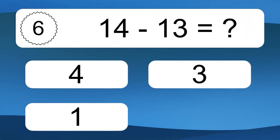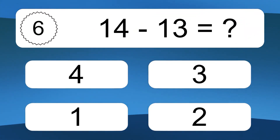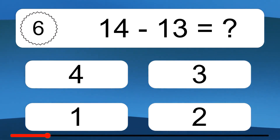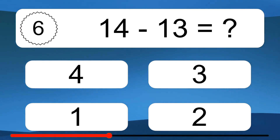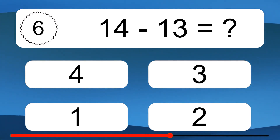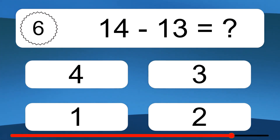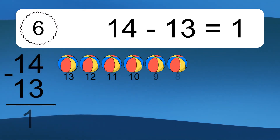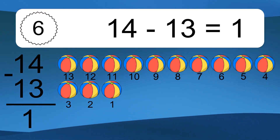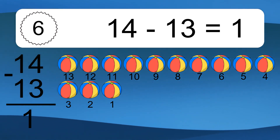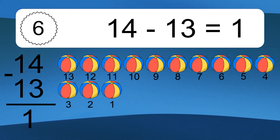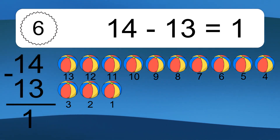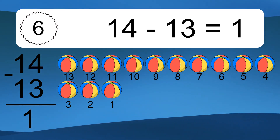14 minus 13 equals what? 14 minus 13 equals 1. Let's count it: 13, 12, 11, 10, 9, 8, 7, 6, 5, 4, 3, 2, 1.